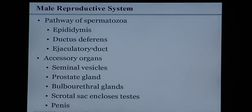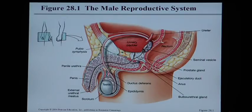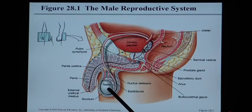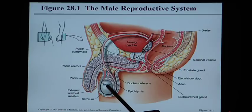The reproductive system of the male begins with the pathway of sperm. There's a mnemonic called 'SEVEDUP' where each letter stands for a part of the pathway of sperm production and release. Starting with S: seminiferous tubules, located inside the testicle. Looking at a mid-sagittal section of the male pelvis, the seminiferous tubules are tiny coiled-up tubes inside the testicle, and those little tubes are where sperm production first begins.